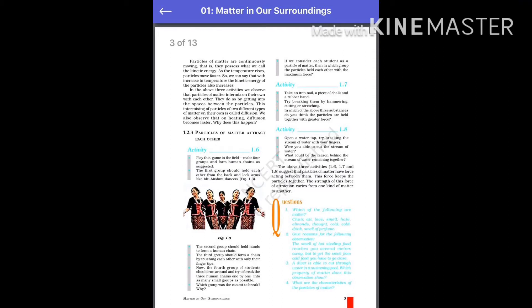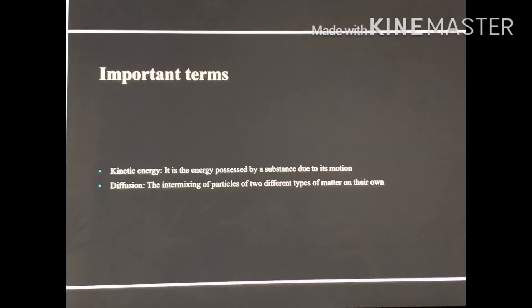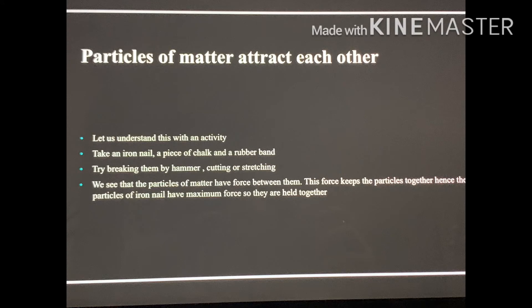To find this, we take three samples: a chalk piece, a rubber band, and an iron nail. Try breaking them by hammering, cutting, or stretching. In which of the three substances do you think the particles are held together with greater force? We find that it is very easy to break a piece of chalk into smaller pieces. It requires more force to break a rubber band, whereas the iron nail does not break at all with large force. This shows that the particles of iron nail are held together with stronger forces of attraction than in a rubber band and chalk piece.